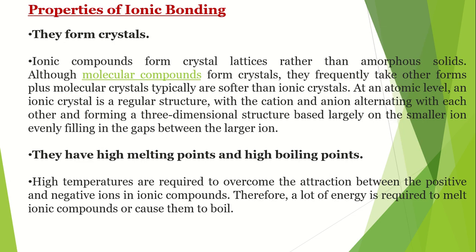Now we talk about the properties of ionic bonding. Ionic compounds form crystals — they form lattices rather than amorphous solids. Although molecular compounds also form crystals, molecular crystals are typically softer than ionic crystals. Ionic compounds also exhibit high melting and boiling points due to the strong attraction between the positive and negative ions. Because of the complete transfer of electrons, the bonds between cations and anions are strong enough to result in high melting and boiling points.